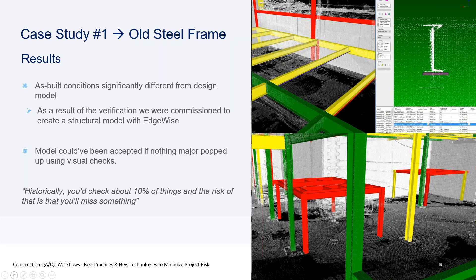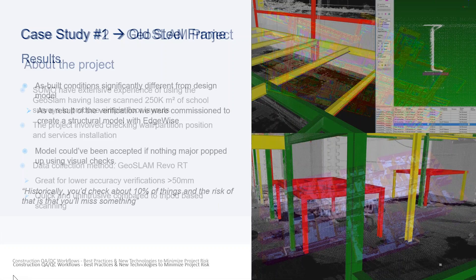There's also a good story here from our office perspective: what the verification proved to the steelwork fabricator was that they needed a fresh model. The design model we'd been given was probably an earlier iteration — there were areas where steels weren't just slightly out of position, but fundamentally different. The red area at the front of the model was effectively a different roof design: it had gone from a double-pitched roof to a mono-pitched roof in what we surveyed on site.